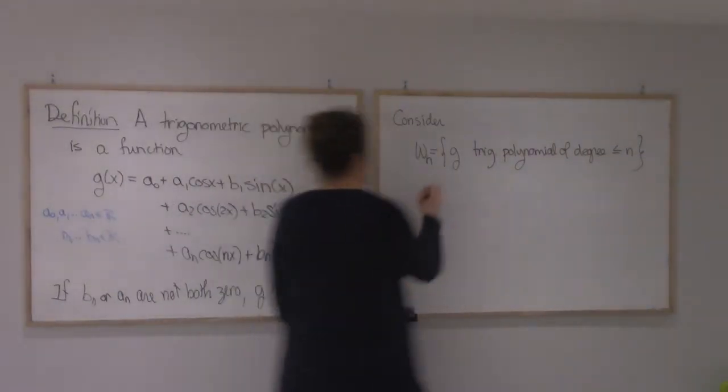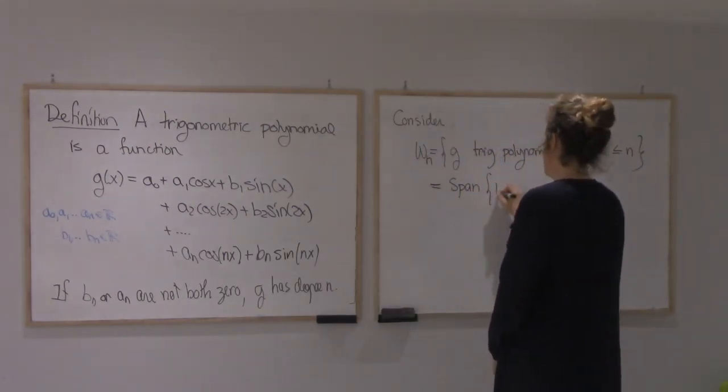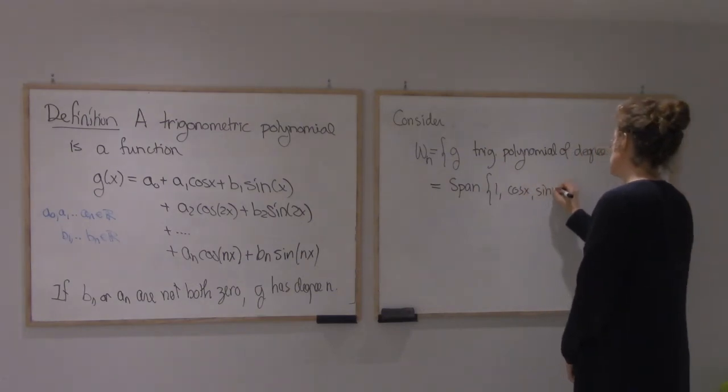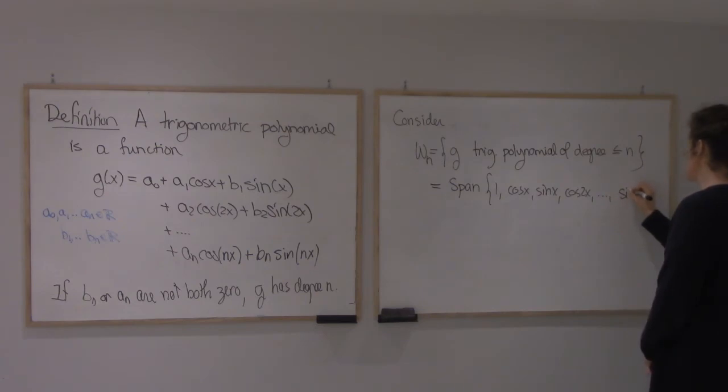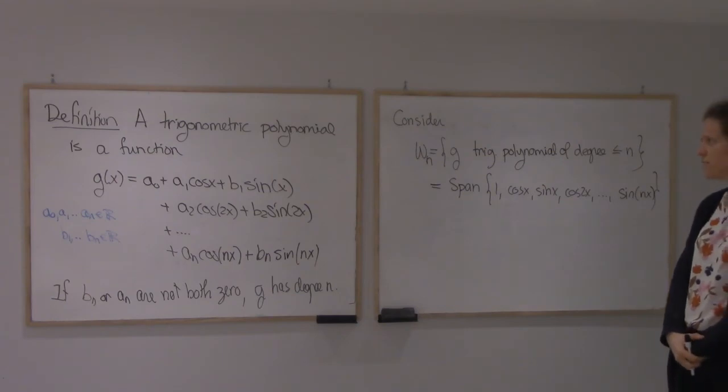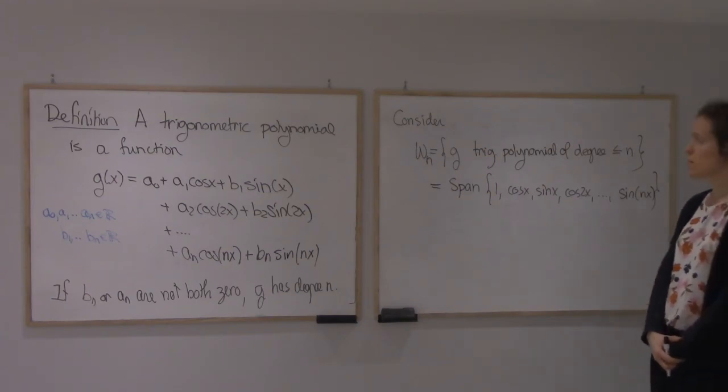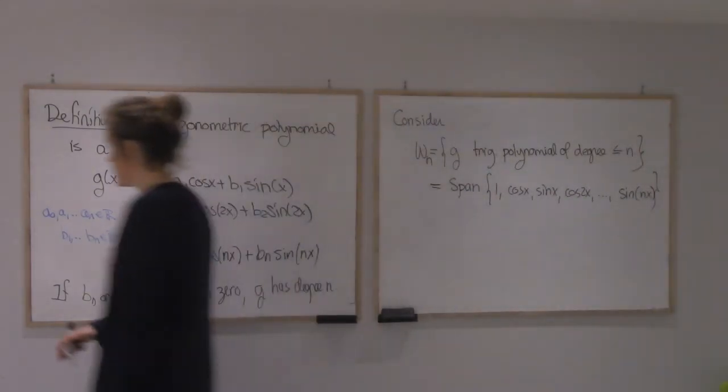This is the span of 1, cosine x, sine x, cos 2x, sine 2x, all the way to sine nx. It is a subspace, just by the way we've defined it. We're going to look at projections onto it. Those are going to be approximation of any continuous function by these cosine and sine functions.